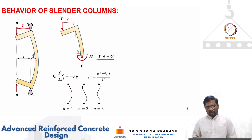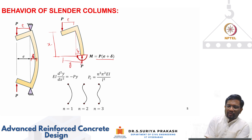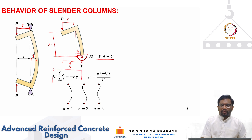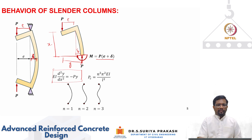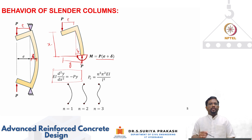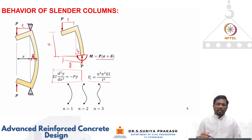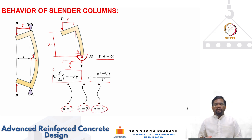From bending theory, taking the section at distance x and writing total deflection as y at any cross section, the bending equation is EI times d²y/dx² = −P·y, where y equals e plus delta for the section considered. This is a second order differential equation, and using boundary conditions we can solve for the critical buckling load. That critical buckling load works out to be n²π²EI/L². Depending on how the column buckles as n half sine waves, n can be 1, 2, or 3, giving multiple values of critical buckling capacity.